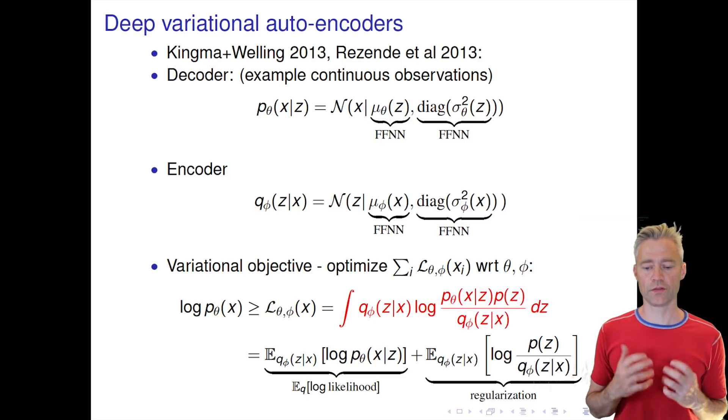This lower bound is still an integral over c, but it's an integral that turns out is much easier to evaluate than the original integral. This variational bound is written here for one single example in red.